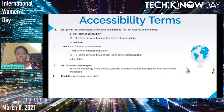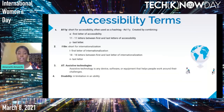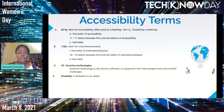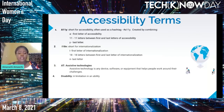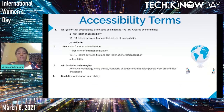The second accessibility term is i18n, which stands for internationalization. The short form i18n is created by combining 'i' — the first letter of internationalization — 18, which is the count of letters between the first and last letter, and 'n' which is the last letter. Our third accessibility term is AT, which stands for assistive technology — any device or software that helps people work around their challenges.